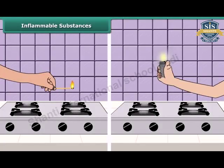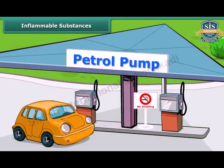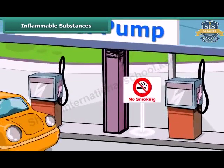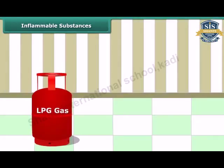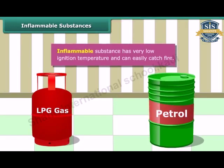Your mother would have told you to keep a burning matchstick or a lighter away from the LPG gas stove in the kitchen. This is because LPG catches fire very easily. Similarly, you must have seen a no-smoking sign board at petrol pumps. It is because petrol also catches fire very easily, and therefore it is advisable not to smoke at petrol pumps. Substances like LPG and petrol are inflammable because they have a low ignition temperature, due to which they readily catch fire.